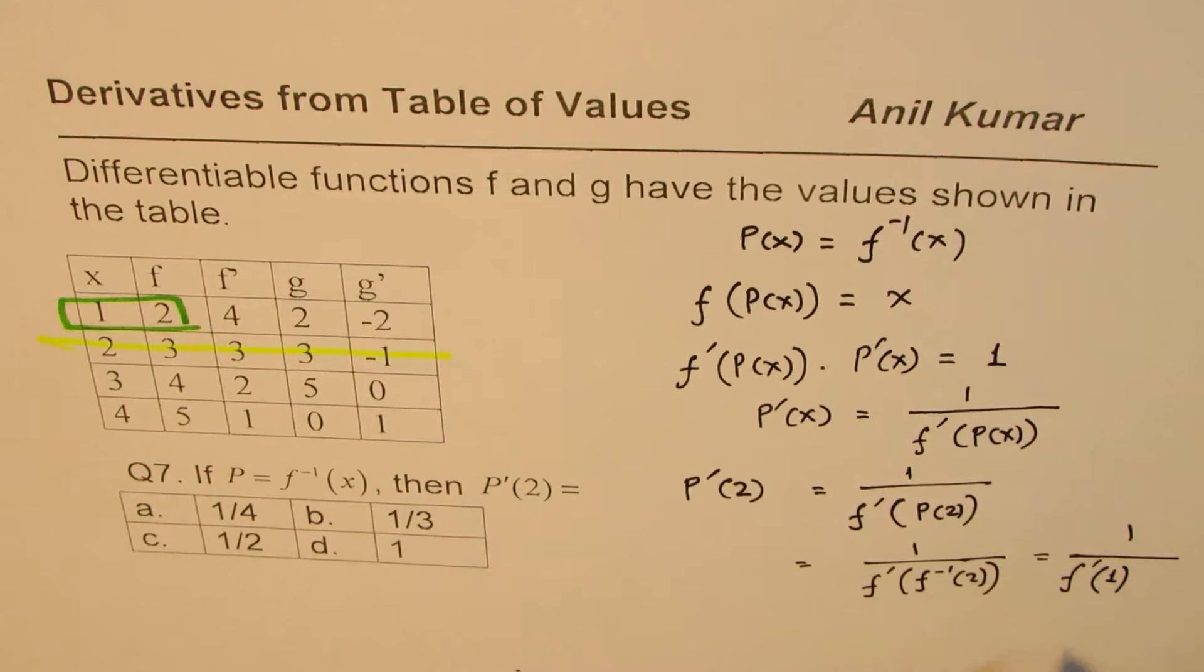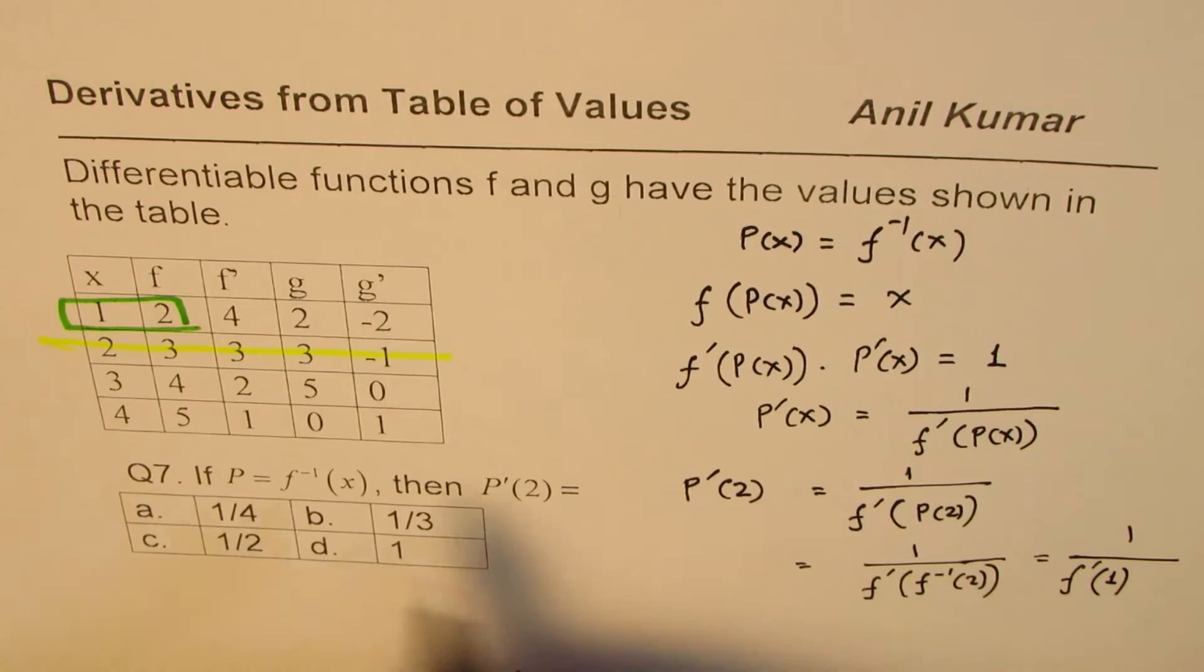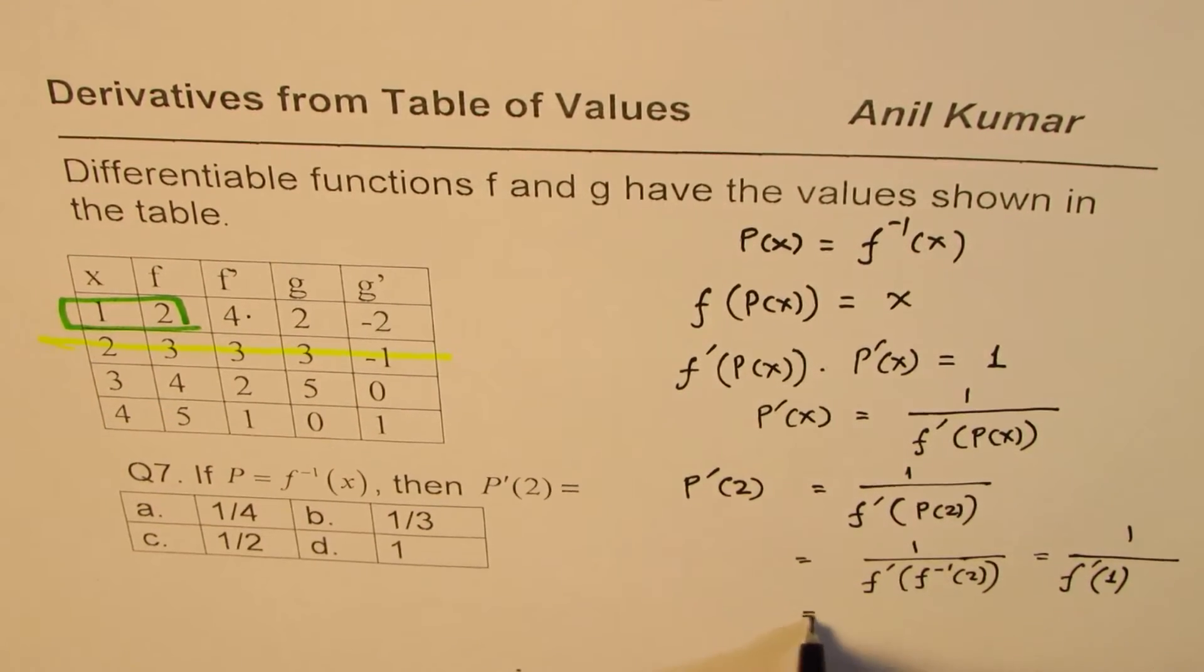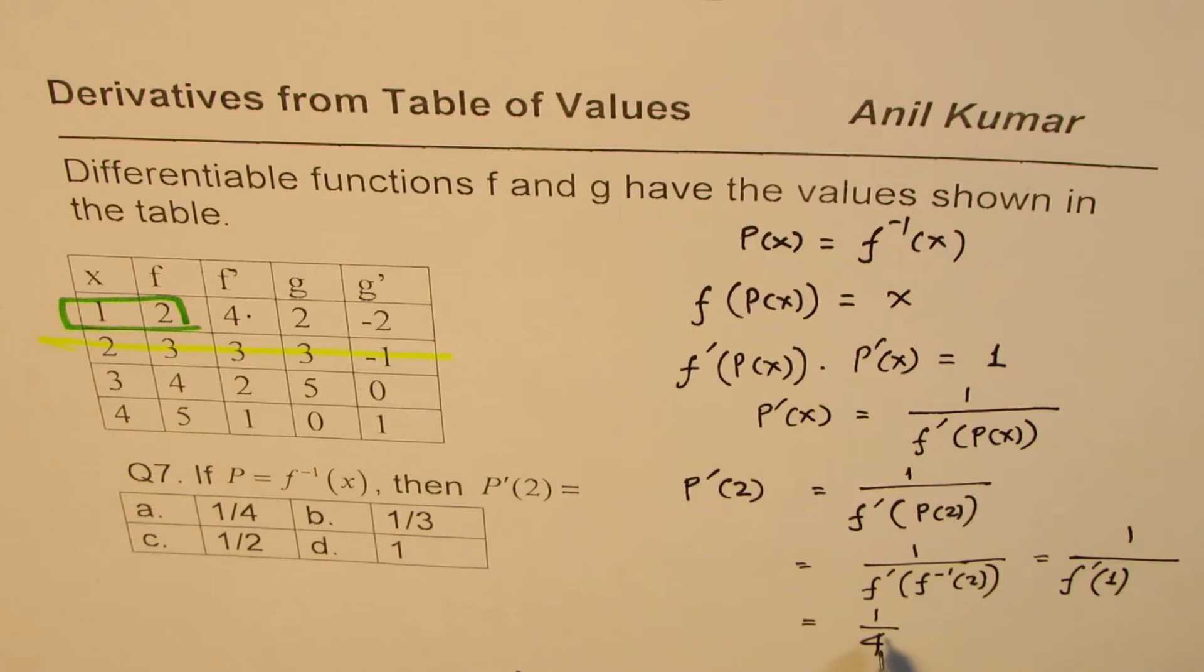Okay. Now, for x equals to 1, what's the derivative? It is 4. So we'll write this as 1 over 4. So that is how we are going to solve it.